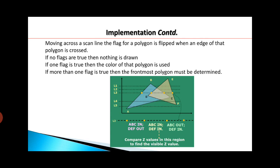Now, if you further move along the scan line, we see that ABC is 'in' and DEF is also 'in', meaning we are inside two polygons simultaneously — there is overlapping. In that case, we have to decide which polygon is visible. And further along, ABC becomes 'out' and DEF is 'in', meaning we are inside polygon DEF and outside polygon ABC. If more than one flag value is set to 'in', it means there is overlapping of polygons, and we have to use the depth value to decide the frontmost visible surface.